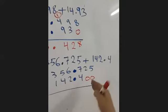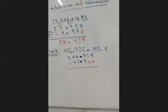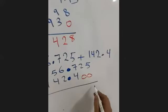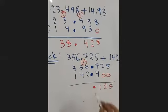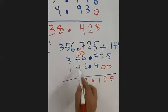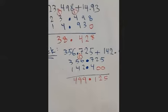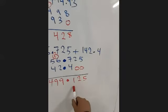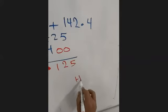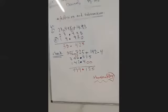Now add normally. 5 plus 0 is 5, 2 plus 0 is 2, 7 plus 4 is 11 — write 1, carry 1. The decimal comes down in the same place. Then 7 plus 2 is 8 (with carry), giving 9. 5 plus 4 with carry is 9, and 3 plus 4 with carry is 14 — write 4, carry 1. The answer is 499.125. You can read that as four hundred ninety-nine and one hundred twenty-five thousandths.